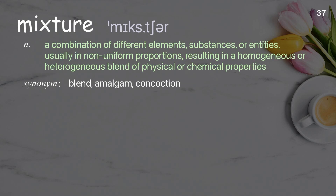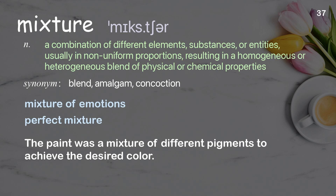Mixture: a combination of different elements, substances, or entities, usually in non-uniform proportions, resulting in a homogeneous or heterogeneous blend of physical or chemical properties. Examples: mixture of emotions, perfect mixture. The paint was a mixture of different pigments to achieve the desired color.